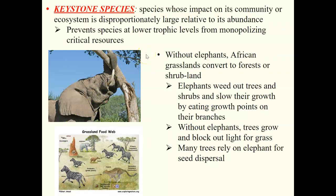Sometimes predator-prey or herbivorous relationships involve a keystone species. A keystone species has a huge impact on its community even though there may not be many of them — it doesn't have to be the most abundant organism, just the most impactful. Removal of a keystone species completely changes the ecosystem dynamics. Keystone species prevent species at lower trophic levels from taking over major resources needed by other organisms.